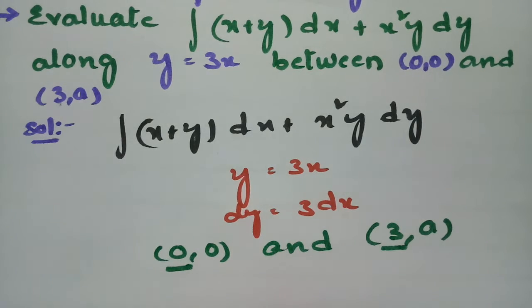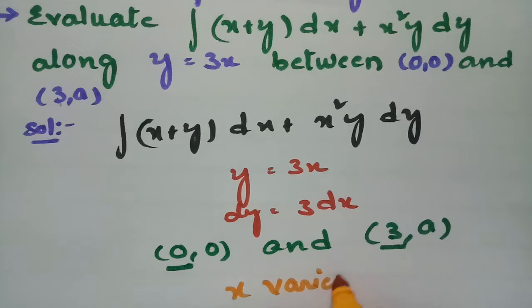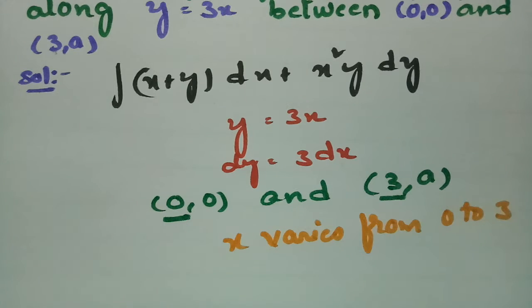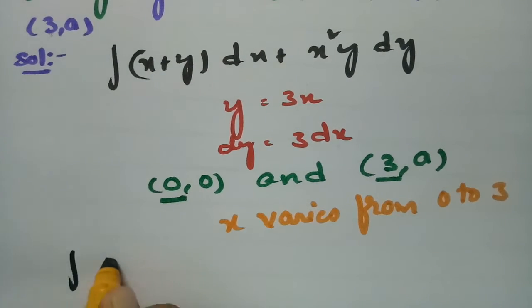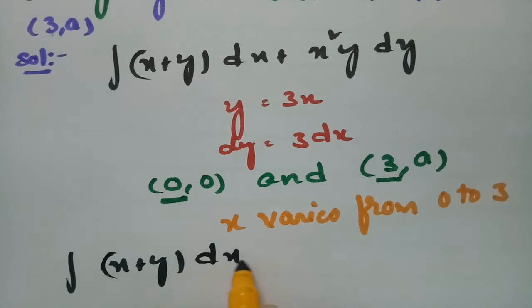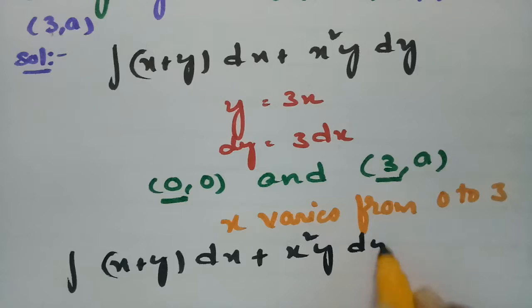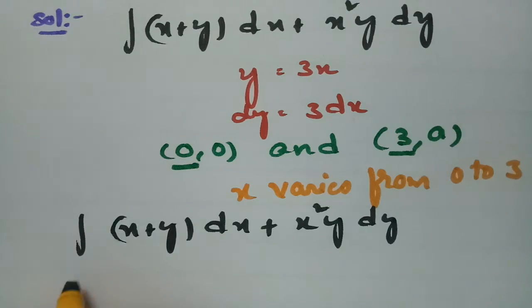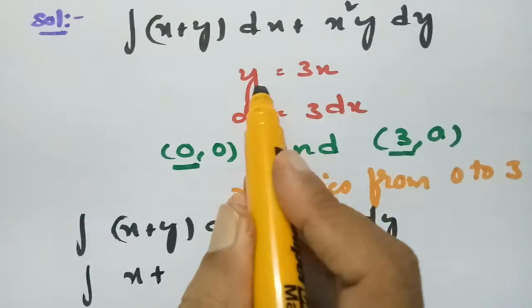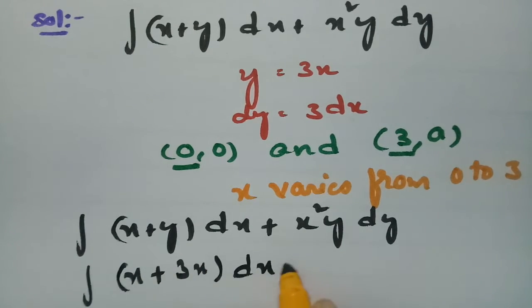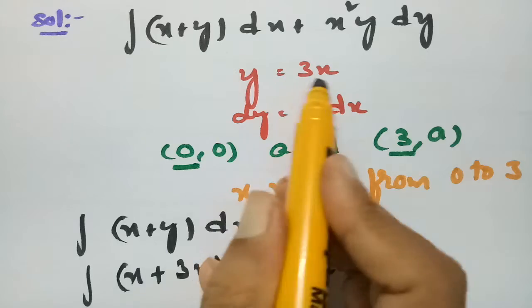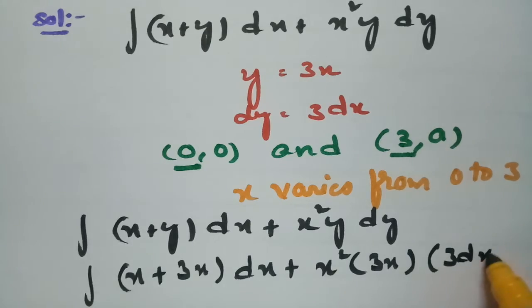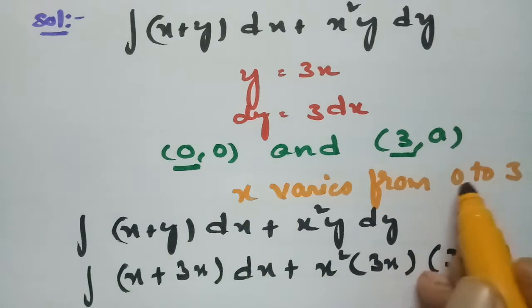The x varies from 0 to 3. Our given integral becomes: in place of y I write 3x, so this is (x + 3x)dx plus x² times 3x times 3dx, with x varying from 0 to 3.